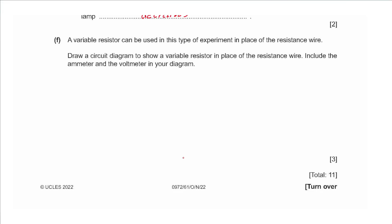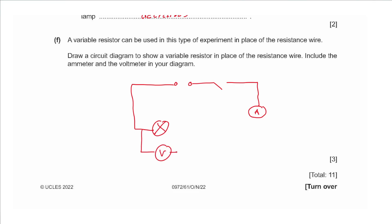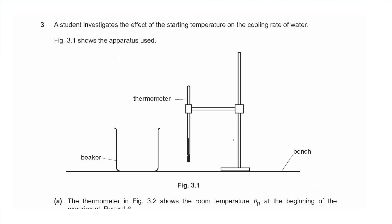Part F says a variable resistor can be used in place of the resistance wire. Draw a circuit diagram showing the variable resistor, ammeter, and voltmeter. In the original diagram we had a power supply and switch with an ammeter in series, and the lamp with a voltmeter in parallel. Now instead of the resistance wire we draw a variable resistor — a rectangle with an arrow across it.